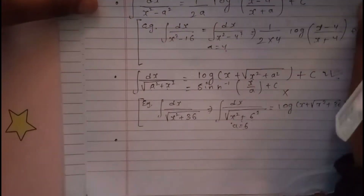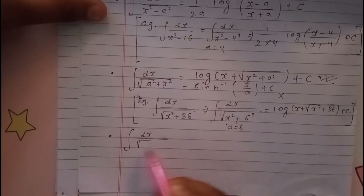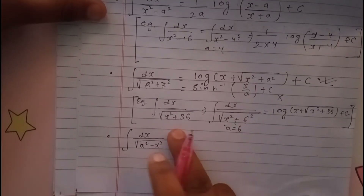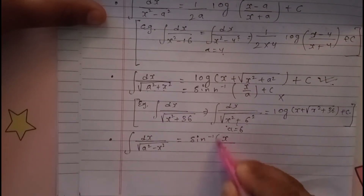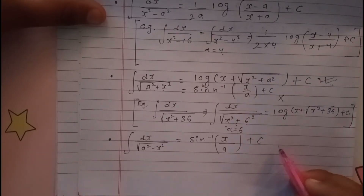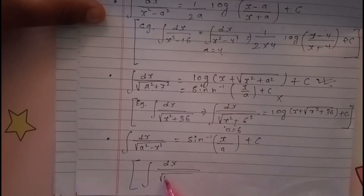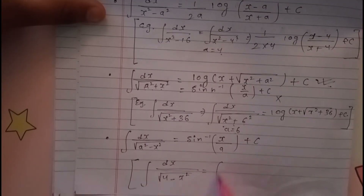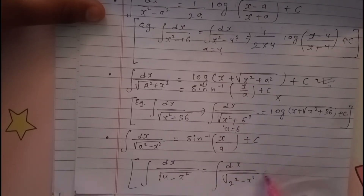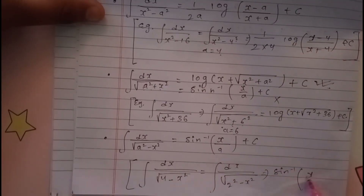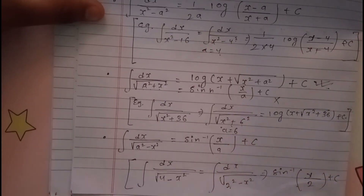For dx upon √(a² minus x²), the formula is sin inverse x by a, plus c. For example, integration of dx upon √(4 minus x²) can be written as dx upon √(2² minus x²). Applying the formula directly: sin inverse x by 2, plus c.